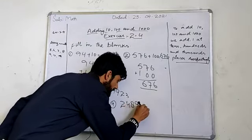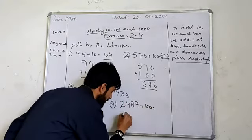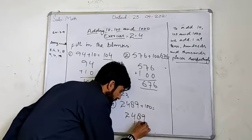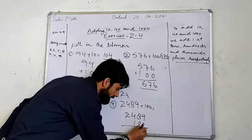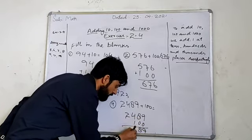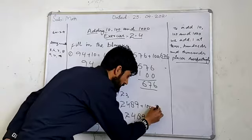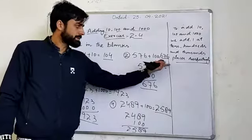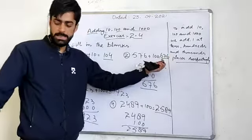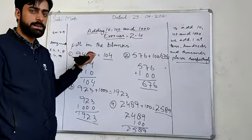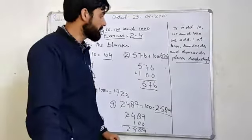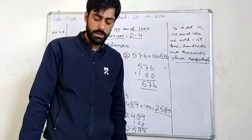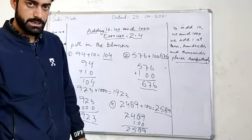The fourth part is 2489 plus 100. Looking at the 100s place, the answer is 2589.